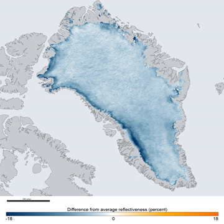In July 2012, another large ice sheet—twice the area of Manhattan, about 120 km²—broke away from the Peterman Glacier in northern Greenland. In 2015, Jakobshavn Glacier calved an iceberg about 4,600 feet thick with an area of about 5 square miles.